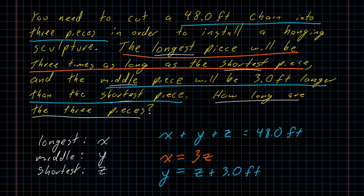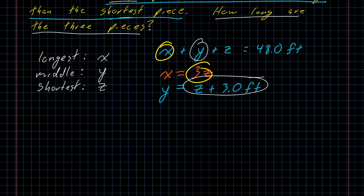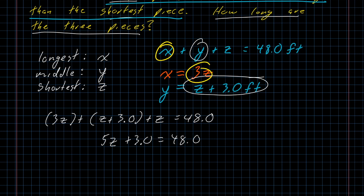From here, the process is the same. I had an x in the original equation. I now know that x is the same thing as 3z. I had a y in the original equation. I now know that y is the same thing as z plus 3.0. And that gives me an equation to work with. Simplifying on the left-hand side, I have some like terms to combine. 3z plus z plus z is 5z. I can subtract 3.0 from both sides of the equation.